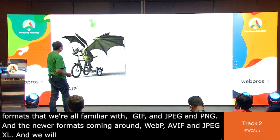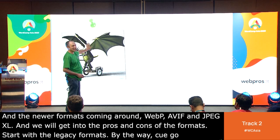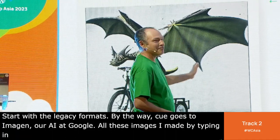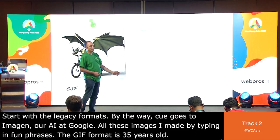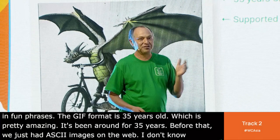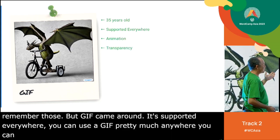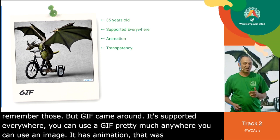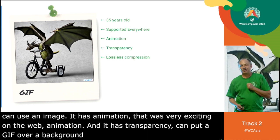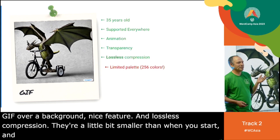We're going to start with the legacy formats. Kudos to Imogen, our internal image-generating tool at Google, similar to Stable Diffusion — all these images I just made by typing in fun phrases. The GIF format is 35 years old, which is pretty amazing. Before that, we just had ASCII images on the web. GIF is supported everywhere; you can use it pretty much anywhere you can use an image. It has animation, which was very exciting, and transparency, so you could put a GIF image over a background. And it has lossless compression — the images are a bit smaller, and when you decompress them, they're exactly what you started with. But it had a limited palette of 256 colors.